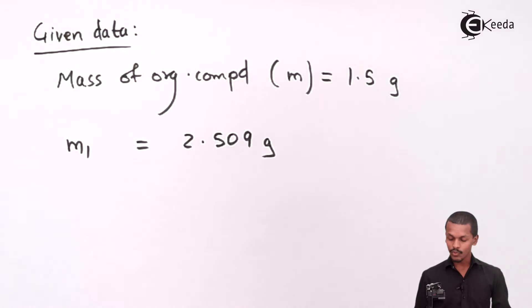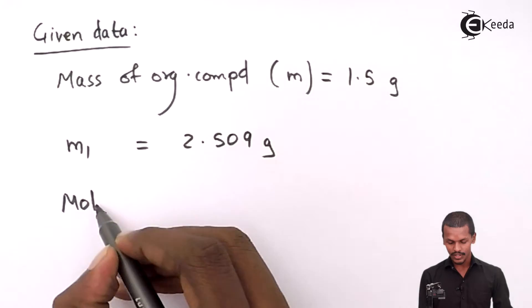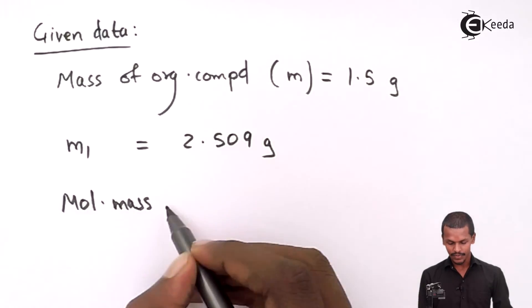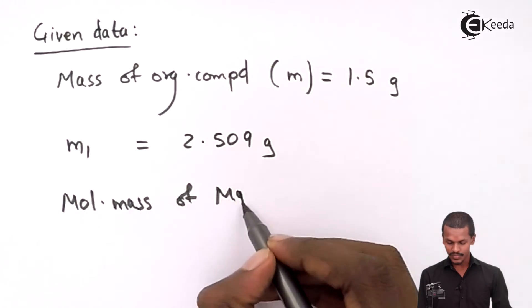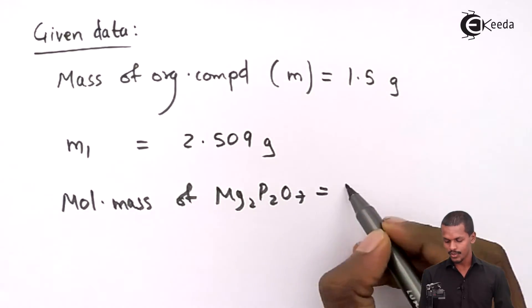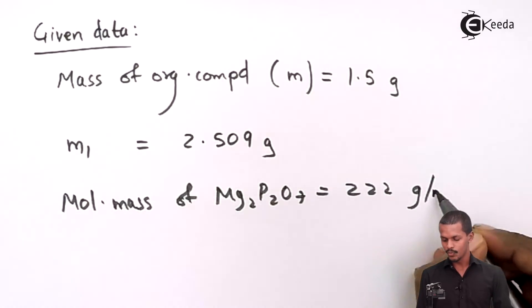We have to calculate, and we have the molecular mass. The molecular mass of magnesium pyrophosphate is given as 222 grams per mole.